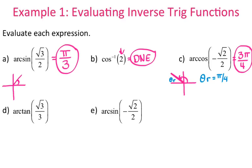I can check this: inverse cosine of negative root 2 over 2 gives me 2.356, and 3 pi divided by 4 when plugged in is the same decimal — which it is.